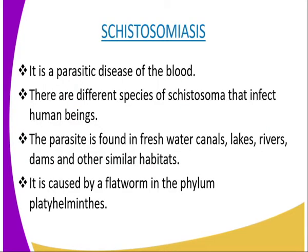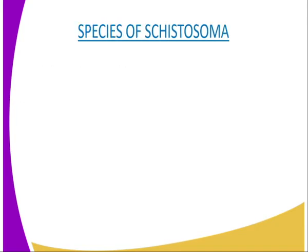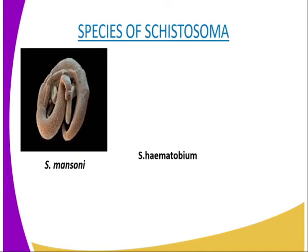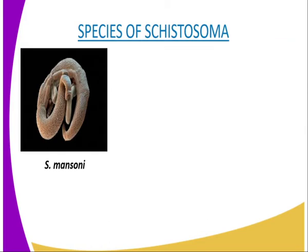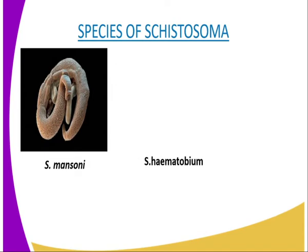We are now going to look at another parasitic worm. We are going to look at schistosomiasis, or we can call it bilharzia. This is a parasitic disease of the blood. It is caused by a flatworm of the phylum Platyhelminthes of the genus Schistosoma. There are different species of Schistosoma that infect human beings, including Schistosoma mansoni, Schistosoma haematobium, and Schistosoma japonicum. The parasites are found in freshwater canals, lakes, rivers, dams, and also rice-growing areas.